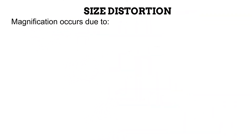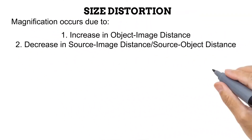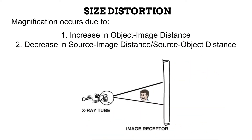This is a cool little video I found online that I thought was a good visual. It states that magnification occurs due to an increase in the OID or a decrease in the SID or the SOD. There's also a magnification rule that states for every 1 inch of OID, we'd use 7 inches of SID to compensate and prevent distortion.